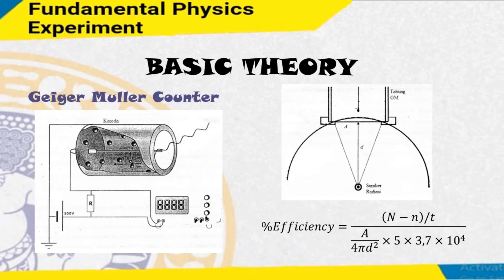The Geiger-Muller tube is filled with an inert gas such as helium, neon, or argon at low pressure, which is subjected to a high voltage. The tube briefly conducts an electric charge when the particles or photons of incident radiation make the gas conductive by ionization. The ionization is significantly amplified in the tube by the Townsend discharge effect to produce an easily measured detection pulse, which is fed to the processing and display electronics.